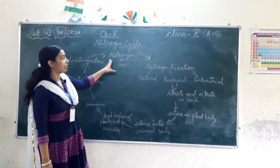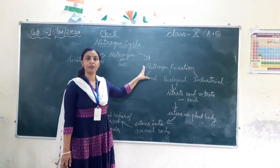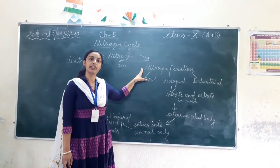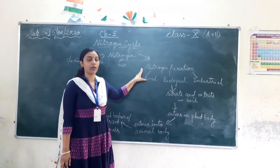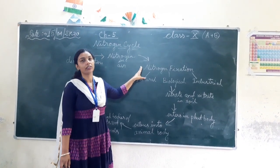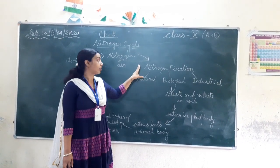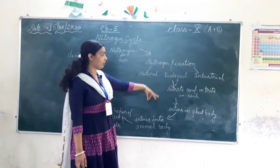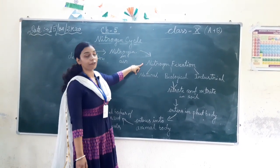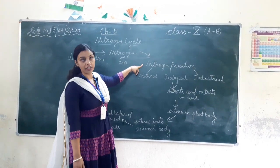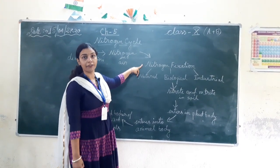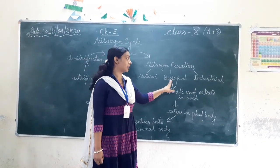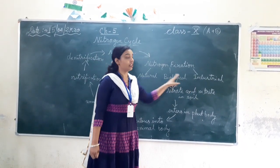After that we will learn about nitrogen fixation. Nitrogen fixation is a chemical process that helps to assimilate the nitrogen in the air, converting it into ammonia. Nitrogen fixation is done by three different methods: first is natural, second is biological, and last is industrial.